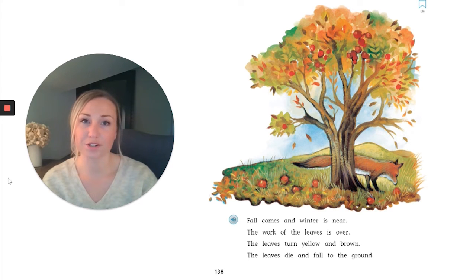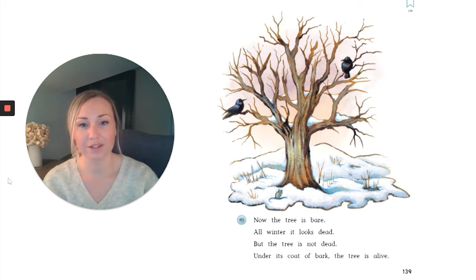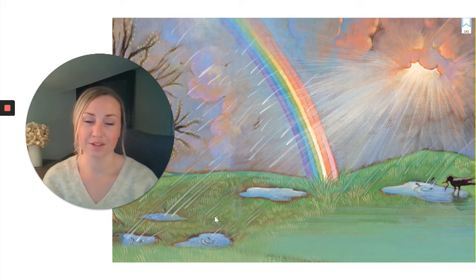Fall comes and winter is near. The work of the leaves is over. The leaves turn yellow and brown. The leaves die and fall to the ground. Now the tree is bare. All winter it looks dead. But the tree is not dead. Under its coat of bark, the tree is alive. Spring comes again. Rain falls. The sun warms the earth. The tree blossoms and new leaves grow. As long as it lives, the apple tree grows. As long as it lives, the apple tree blossoms in the spring and apples grow on it.